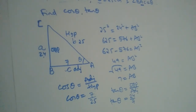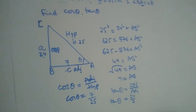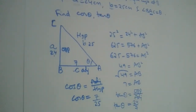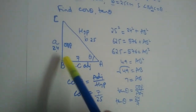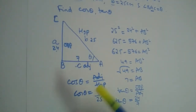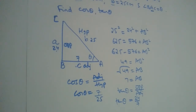This is how we solve problems in trigonometry. Basically when two sides are given, we find the third side using the Pythagorean theorem, and then find the trigonometric ratio. When three sides are known, we can find any trigonometric ratio.